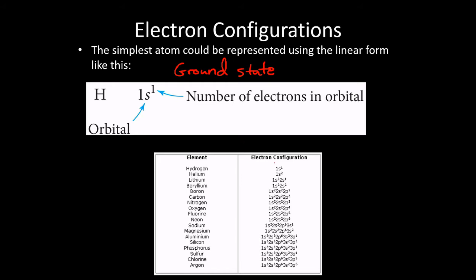For any subshell that has electrons in it, we write the principal quantum number and then the letter for the subshell — S, P, D, or F, corresponding to L values of 0, 1, 2, and 3. Then as a superscript we put the number of electrons in that subshell. Hydrogen, having just one electron in the lowest possible energy orbital — the 1s — would be written as 1s¹: one electron in the 1s.